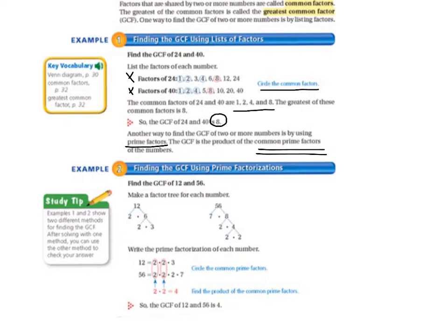So let's look at example 2. Finding the GCF using prime factorizations. Find the GCF of 12 and 56. So our first step is to make a factor tree for each number.